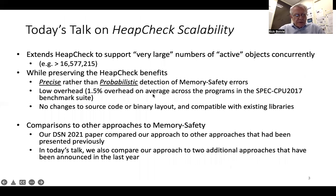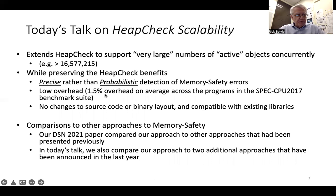So in today's talk, we extend what we presented last year to support very large numbers of active objects concurrently — more than 16 million — while at the same time preserving HeapCheck's benefits of precise rather than probabilistic detection of memory safety errors, again with low overhead of 1.5% on average, and again with no changes to source code or binary layout.